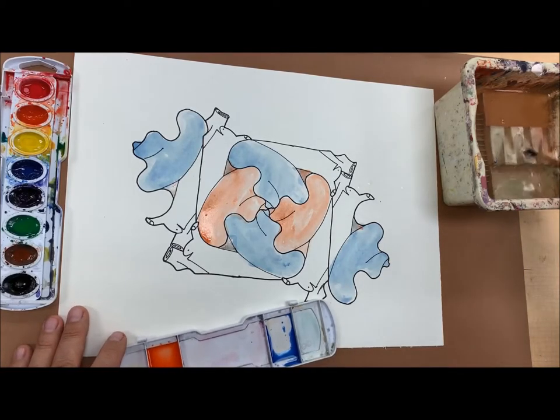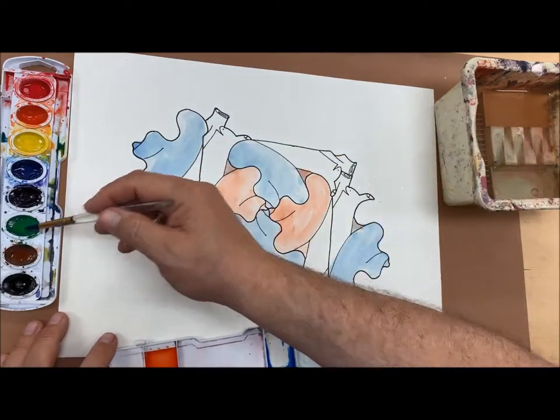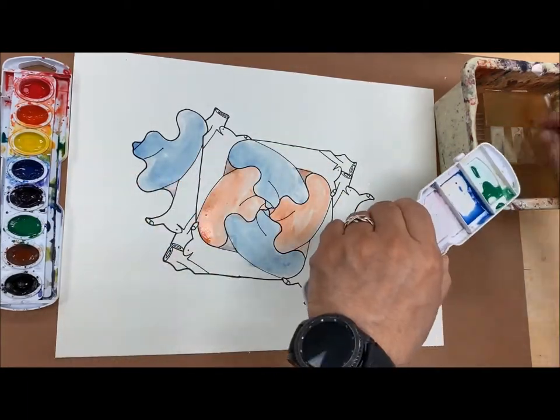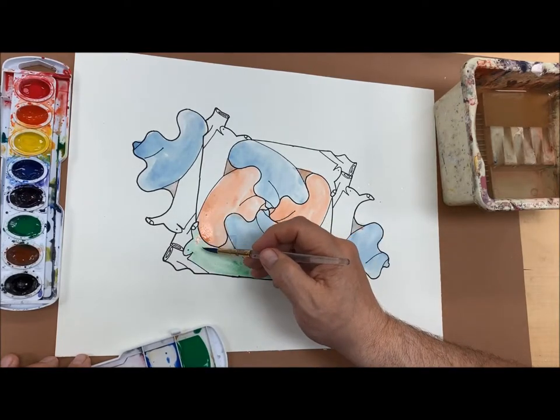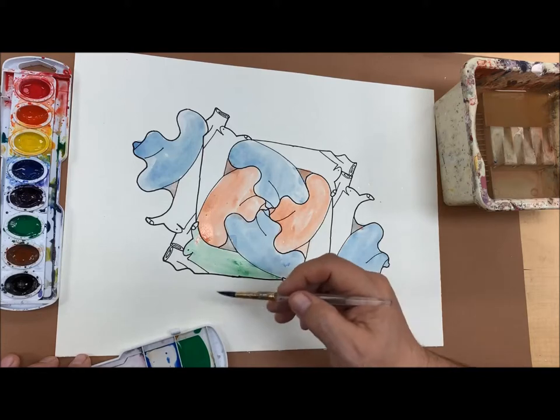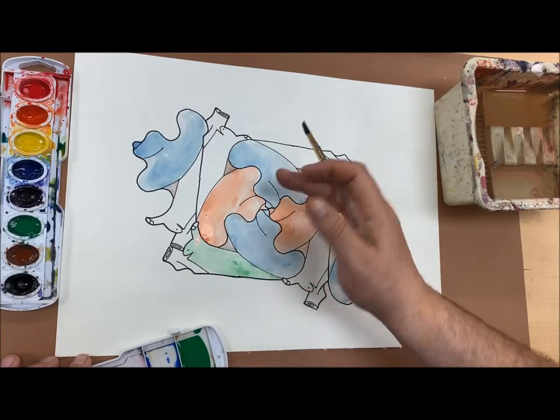Now I'm going to paint the body of the snail and I'm going to just use a green. So there's a little bit of bleed happening right now.